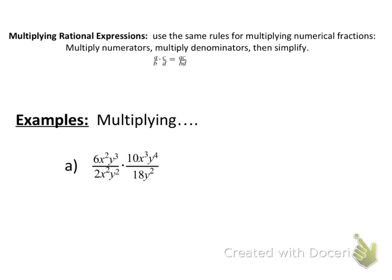Now let's look at multiplying rational expressions. The same rules apply as for multiplying numerical fractions: multiply the numerators, multiply the denominators, then simplify. For example, 1/2 times 3/5 — multiply across the numerator to get 3, and across the denominator to get 10, giving 3/10.